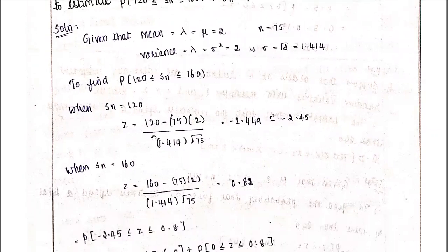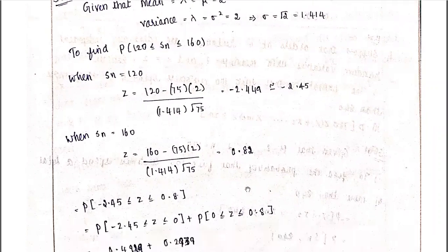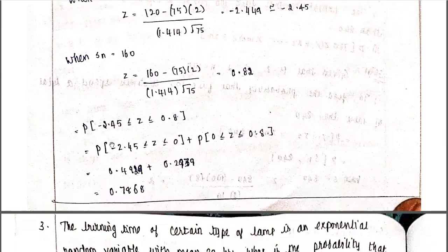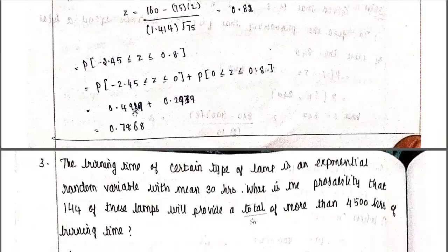When Sn = 160, substituting gives Z = 0.8. So we find P(−2.45 ≤ Z ≤ 0.8). This equals P(0 ≤ Z ≤ 0.8) plus P(0 ≤ Z ≤ 2.45). From the table, the values are 0.2939 and 0.4929, giving a total probability of 0.7868.